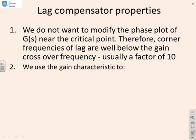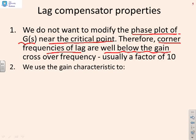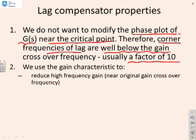Thinking about design, we really don't want to modify the phase plot of our system G(S) near the critical point. Given that a lag compensator has negative phase, that could rotate your Nyquist diagram closer to the critical point and therefore make your margins much worse. To avoid this, we need the corner frequencies of the lag to be well below the gain crossover frequency — usually by a factor of 10. So we need to keep this negative phase well away from the gain crossover frequency. What we're going to do with the gain characteristic is use it to reduce the high frequency gain near the gain crossover frequency in order to get good margins.